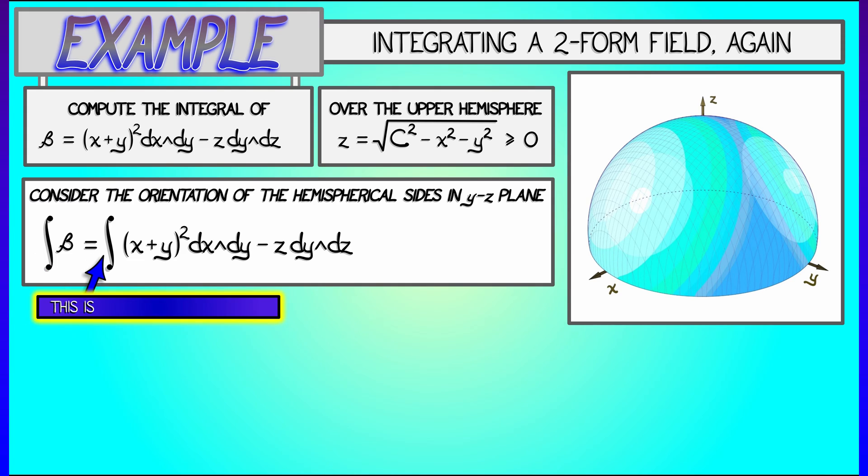That first term has a dx wedge dy in it. That is just projected area in the xy plane. If we project that hemisphere down, we get that disk of radius c over which we eventually did our integral.